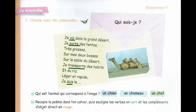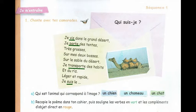Comment reconnaître le complément d'objet direct ? Pour reconnaître le COD, il suffit de trouver le verbe et son sujet et de poser la question après le verbe : Quoi ? Qui ? Exemple : Je porte des tentes. Le sujet est « je », le verbe « porte ». Je pose la question : Je porte quoi ? Je porte des tentes.